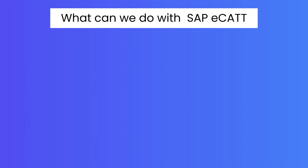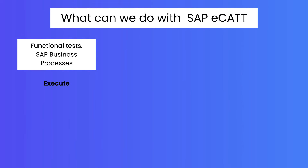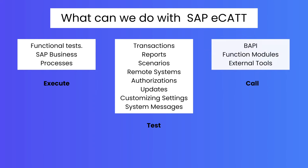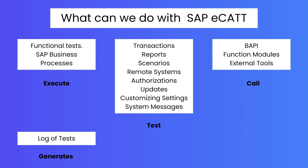What can we do with SAP eCATT? With SAP eCATT you can execute functional tests to test SAP business processes end-to-end. You can test SAP transactions, reports, scenarios, remote systems, operations, updates, customizing settings, and system messages. Within eCATT scripts, you can call BAPIs, function modules, and external tools like QTP. Once you execute any SAP eCATT tests, it generates log files where you can see the log of the entire test case execution.